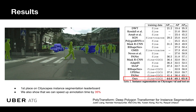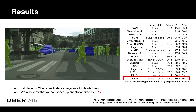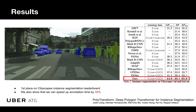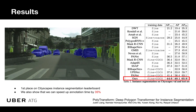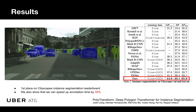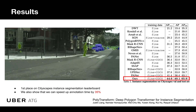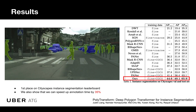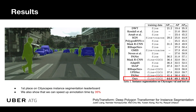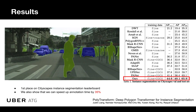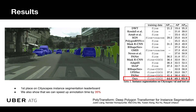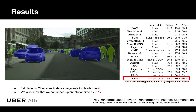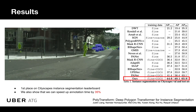We achieved first place on Cityscapes instance segmentation leaderboard, beating the current state-of-the-art by 3.7%. We also ran an experiment where annotators annotate 150 images given our predicted polygons, and show that we can speed up annotation time by 35%.